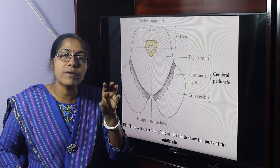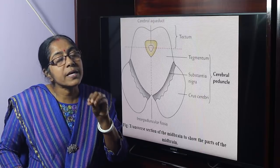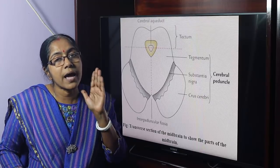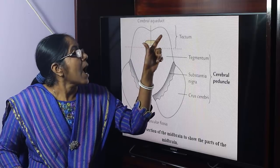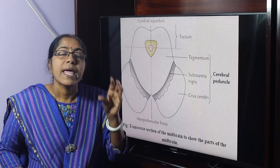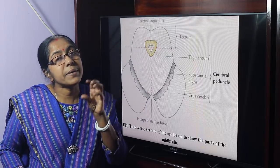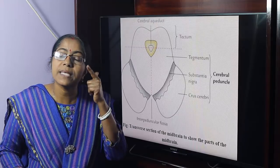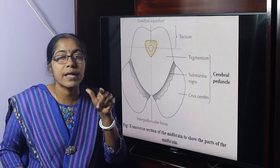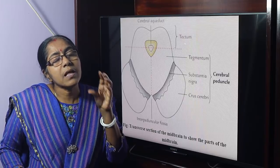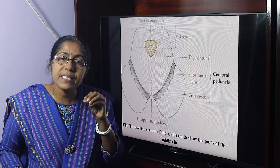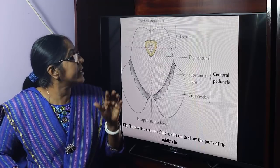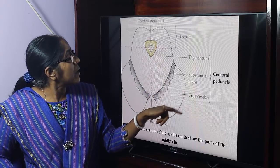The superior colliculus is connected with the lateral geniculate body via the superior brachium. The lateral geniculate body is associated with optic radiation, and the medial geniculate body is associated with auditory radiation.